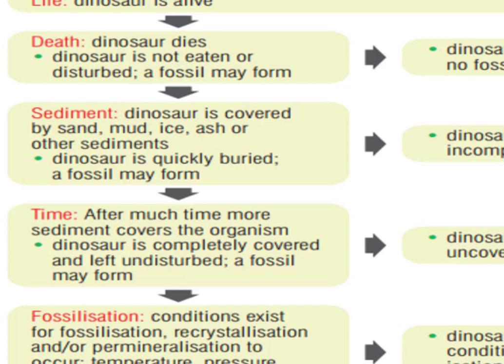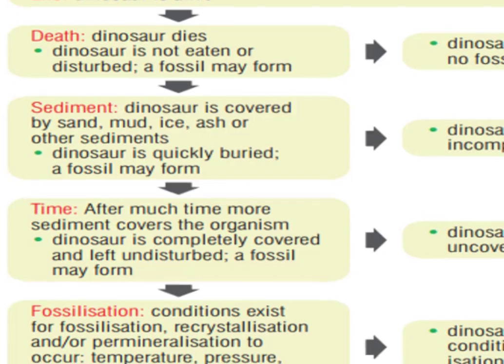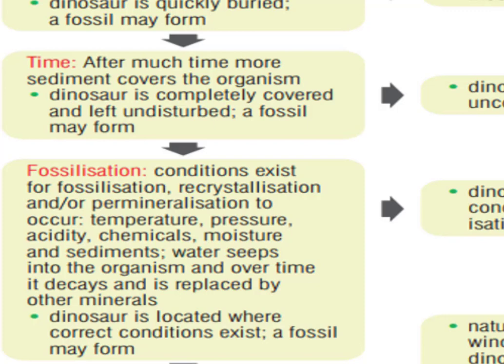After much time, the sediments completely cover the dead remains, leaving them undisturbed. Suitable conditions for fossilization must exist — that is, the temperature, pressure, acidity, chemicals, moisture, and sediments must all be suitable. When good conditions exist, recrystallization or permineralization takes place: water seeps into the dead remains, and over time decays the original chemical substances, replacing them with other minerals, as the dinosaur's remains are located where correct conditions exist for proper fossilization.